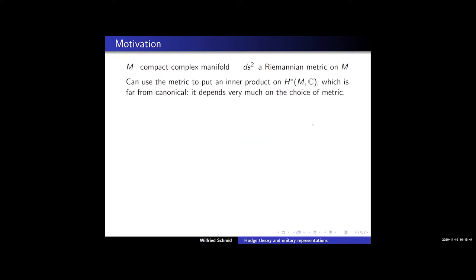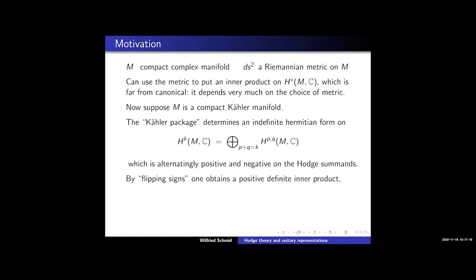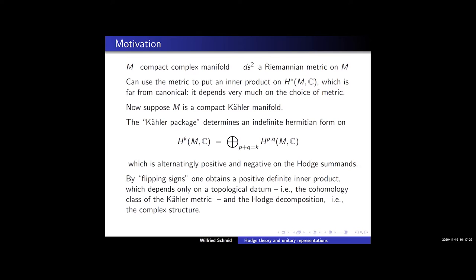Now suppose M is a compact Kähler manifold. Then the so-called Kähler package puts an indefinite Hermitian form on the de Rham cohomology, and that is alternating — positive and negative definite on the Hodge summands. So by flipping signs, one obtains a positive definite inner product on the de Rham cohomology, which depends only on topological data: the cohomology class of the Kähler metric and the Hodge decomposition, that is the complex structure.